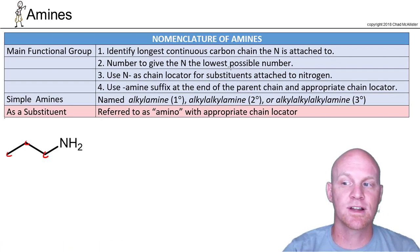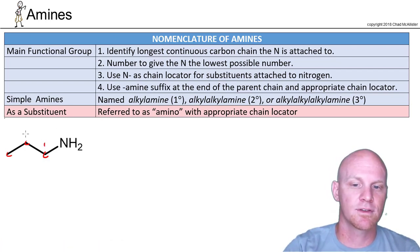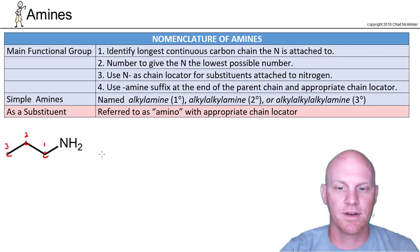We want to make sure the nitrogen gets the lowest possible number. So we'd number this right to left. Notice the nitrogen itself doesn't actually get a number. But in this case, we number it right to left. That way the nitrogen is carbon one instead of carbon three.